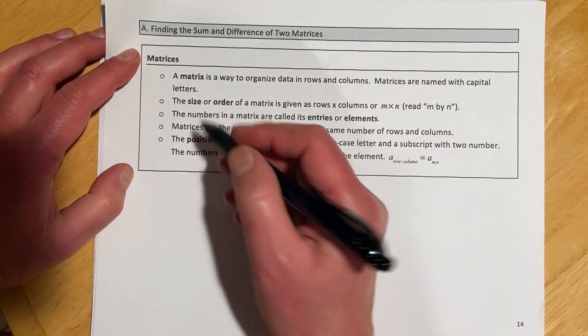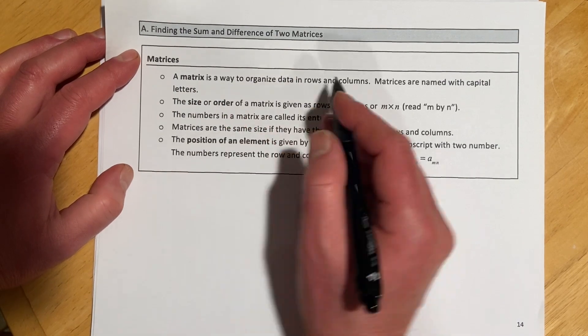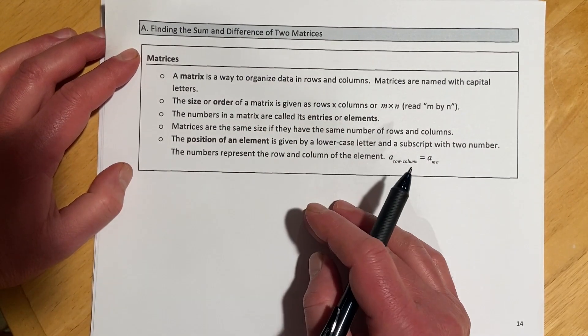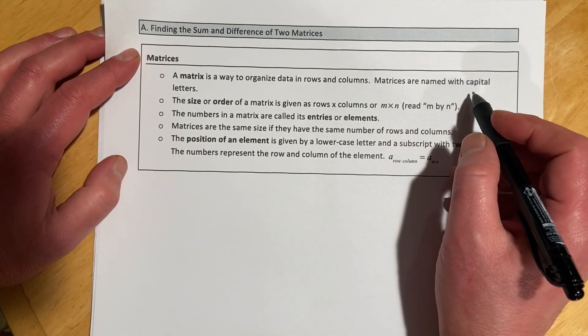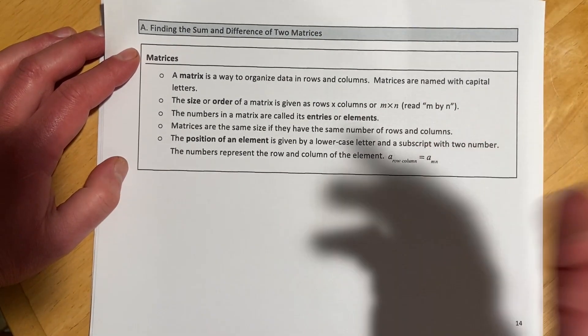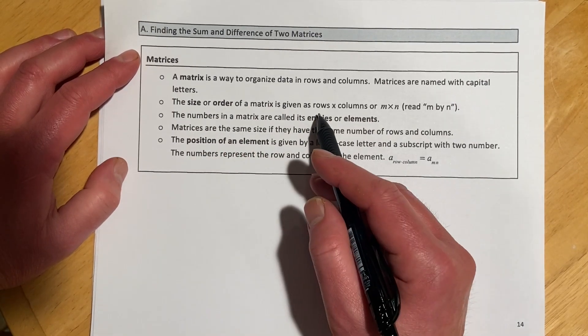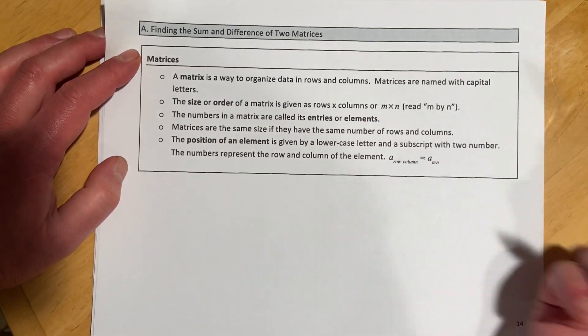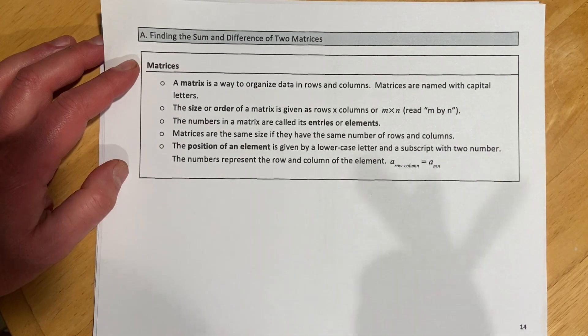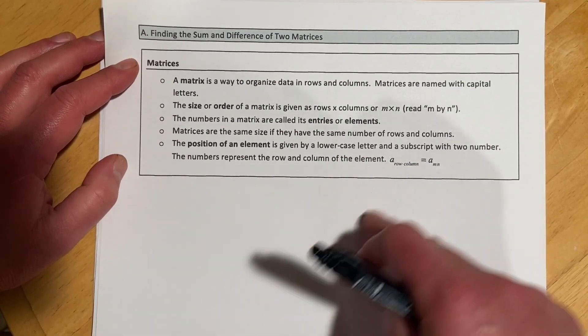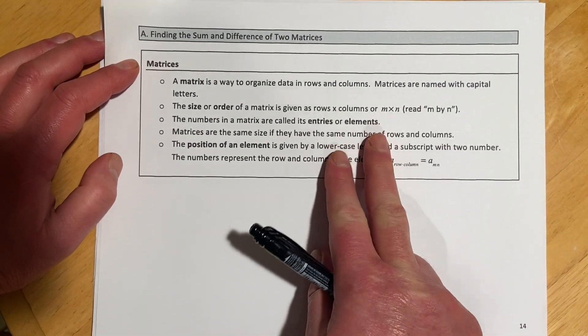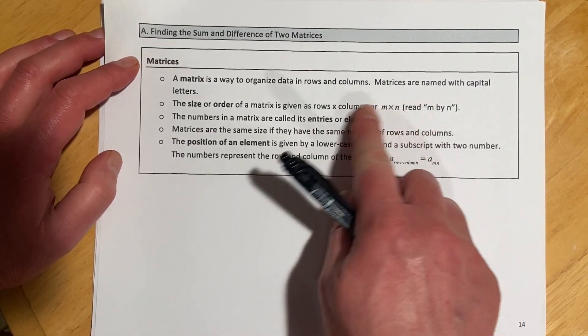So as we've seen in the last section, a matrix is a way to organize data in rows and columns. In our case it was equations, but it could also just be data. Matrices are going to be named with capital letters. The size and order of a matrix is given by rows and columns, so we were just working on a lot of 3x4 matrices because we had 3 rows, 3 equations by 4 columns. I'll do examples with these also. And those are read M by N, so rows, columns, M, N.